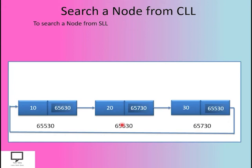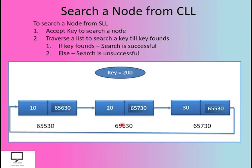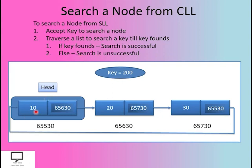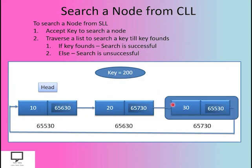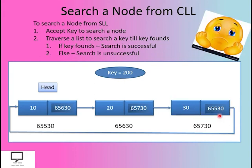Let's try another example where the key is 200. We start from the head and compare each node's information part with the key 200. First node — not equal, move forward. Second node — not equal, move forward. Third node — not equal. But here we cannot move forward any further, because the next field of this node is the address of the head node, indicating the end of the list. We stop here, and the search is unsuccessful — the key 200 is not present in the linked list.